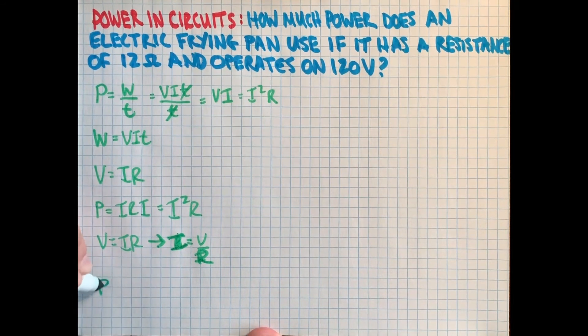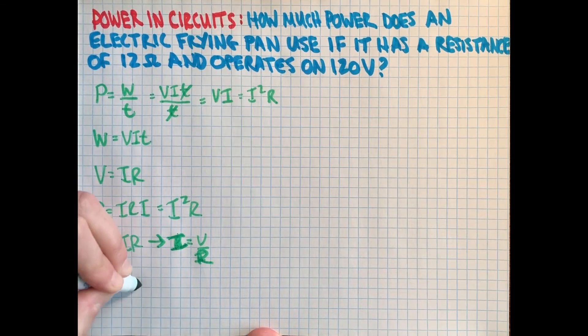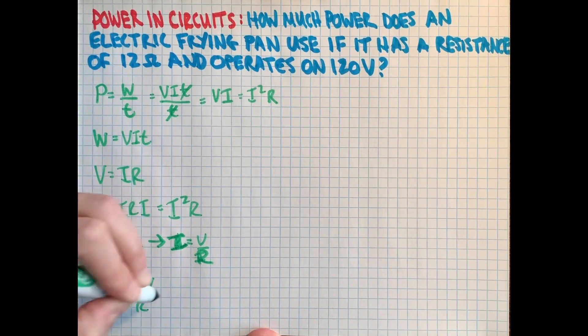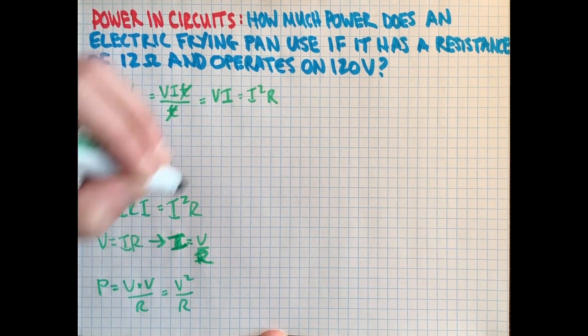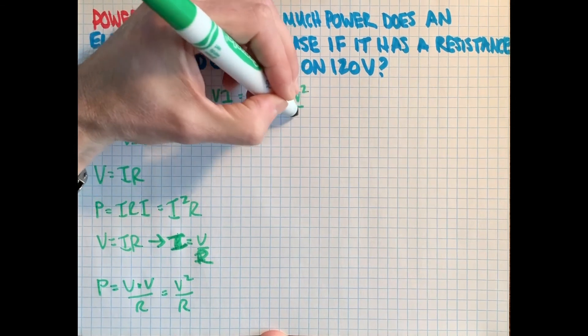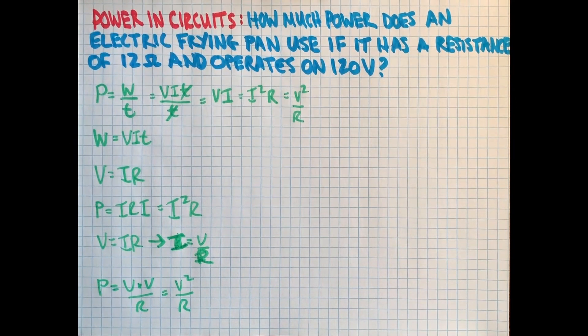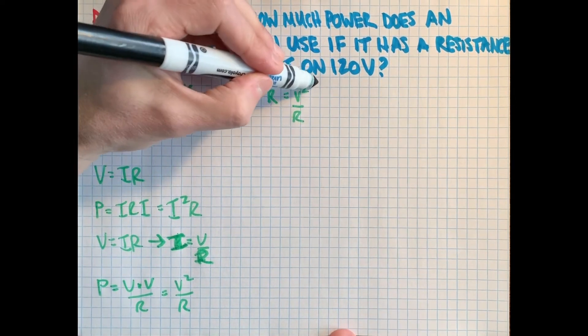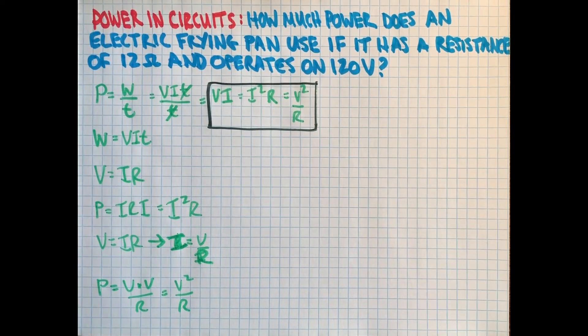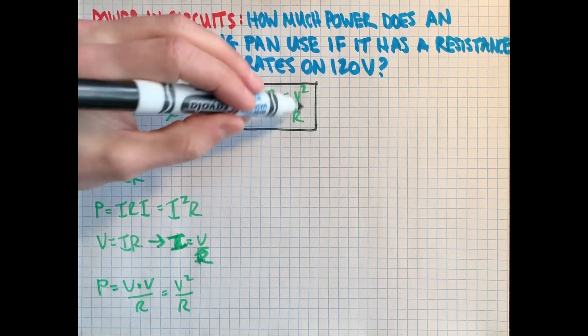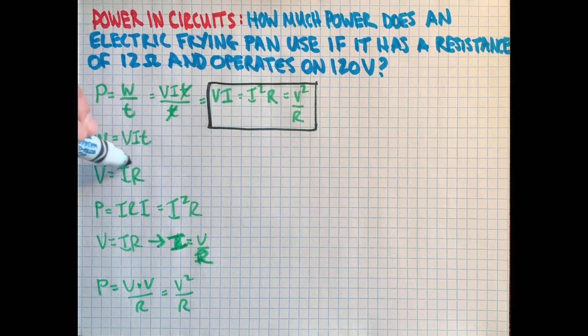And if I put that into the formula here, I get power is voltage times voltage all over R, there's my I, and I get V squared over R for a third formula. So these are the three versions of the power formula that you use when solving power in circuits.